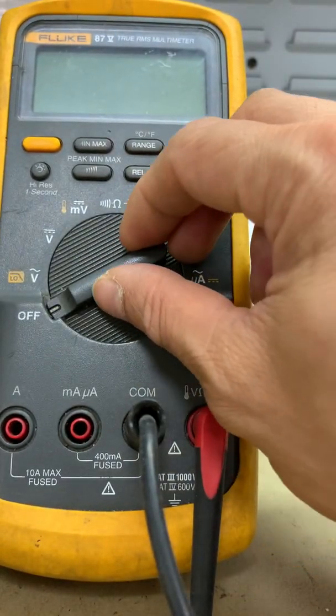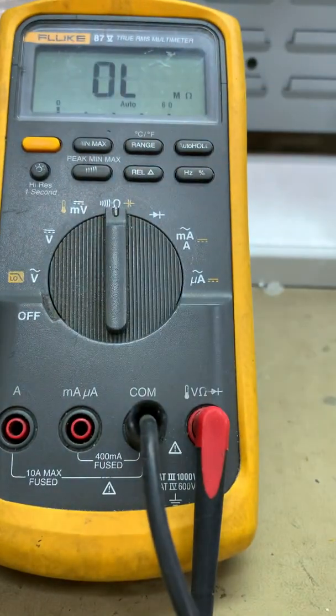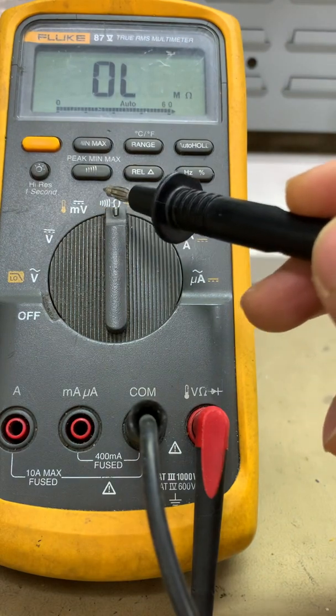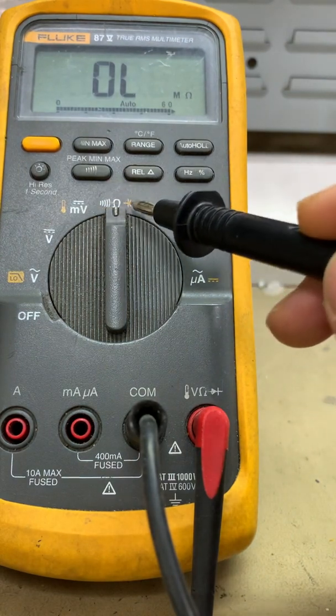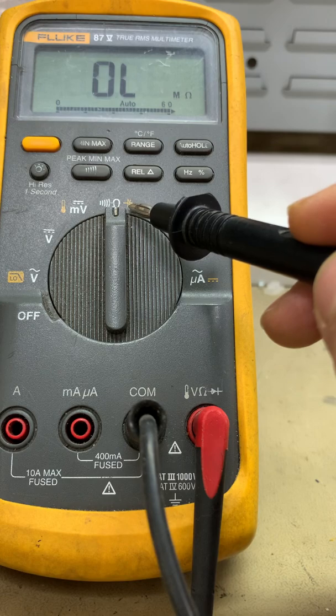Let's calibrate our meter here at this range: resistance continuity. As we can see this schematic symbol for an electrolytic capacitor.